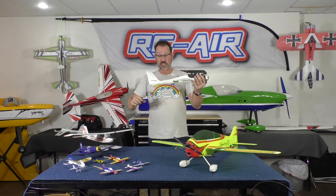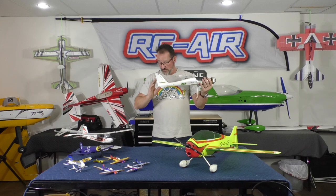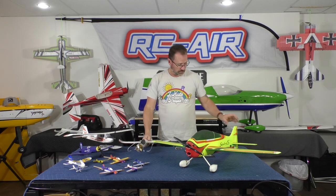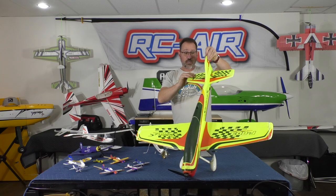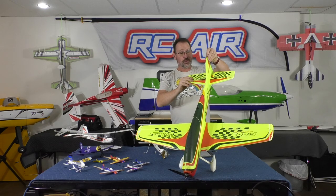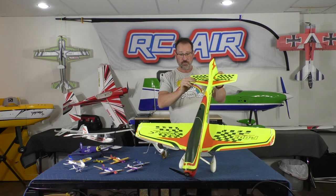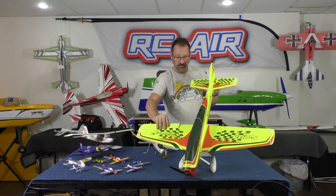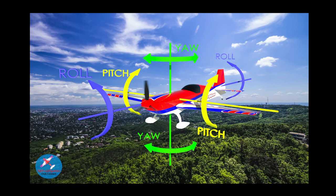Let's take a second to talk about flying surfaces. On your plane, you have your elevator, your rudder, and your ailerons. Look at this drawing and you can see three different axes of flight: you have yaw, which is controlled by your rudder; pitch, which is controlled by the elevator; and roll, which is controlled by the ailerons.